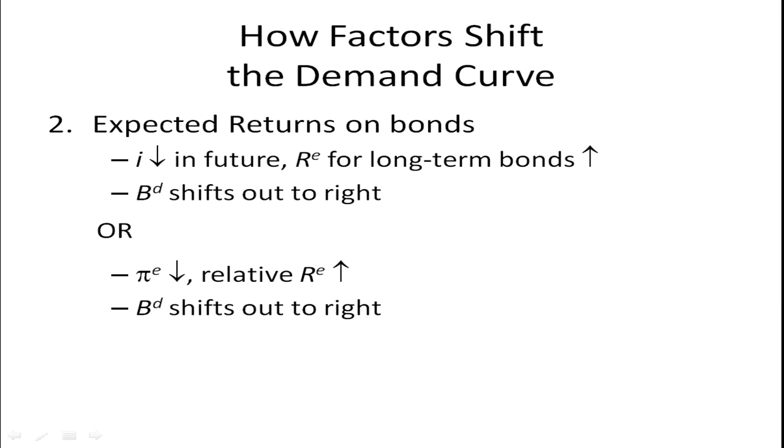Expected return on bonds. If the interest rate in the future goes down, the expected return, R^e, for long-term bonds goes up. One way to think about that is interest rates down mean bond prices go up. The longer the duration or term until the bond matures, the more the bond's price is going to go up. That's going to increase the demand for bonds. That's changes in future interest rates, not the current interest rate.